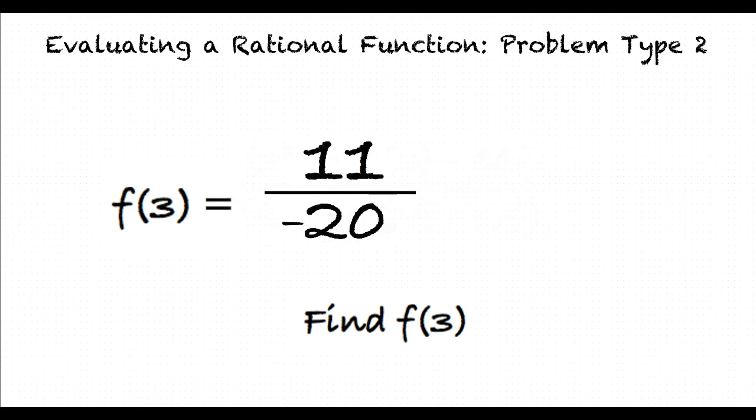This yields 11 over negative 20, right? Exactly. Therefore, f of 3 equals negative 11 twentieths.